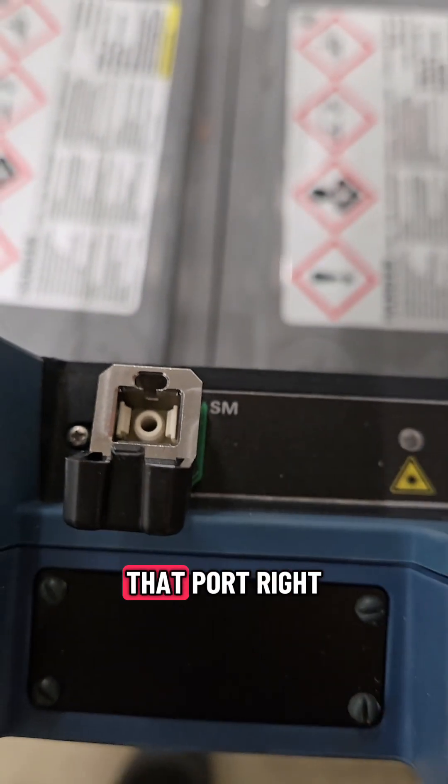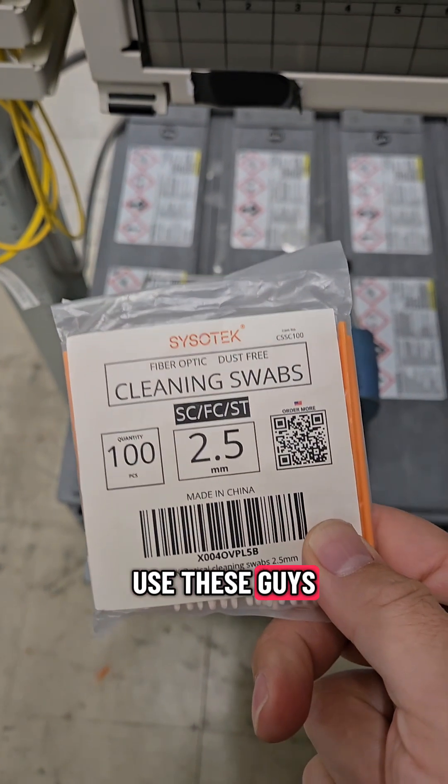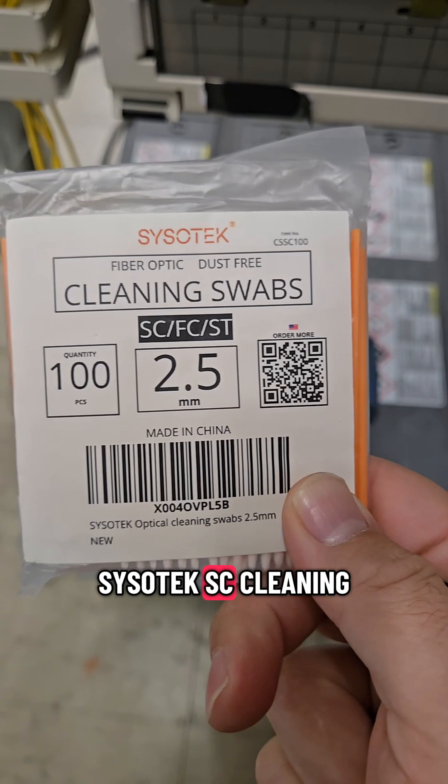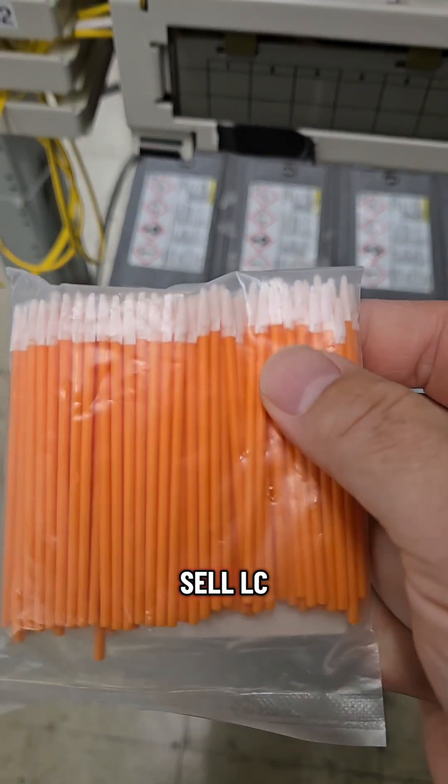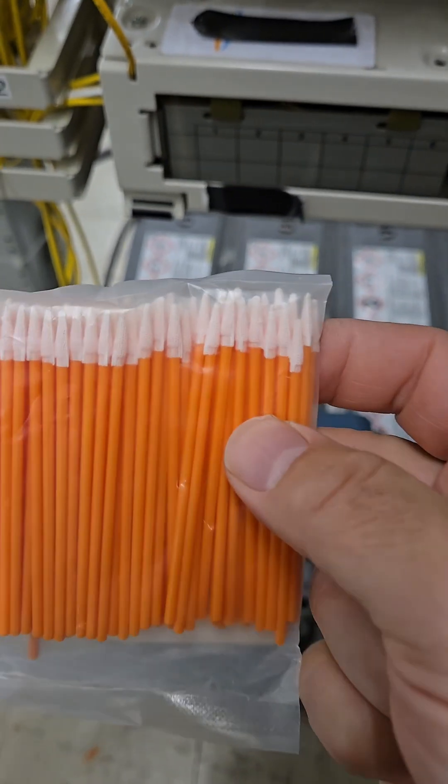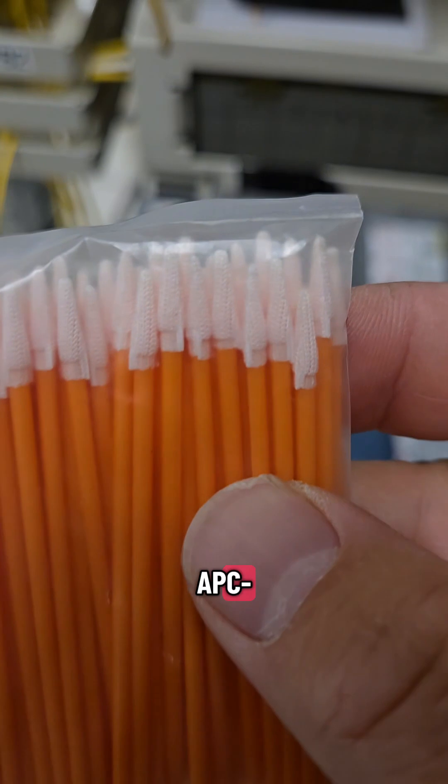That port right there is gonna get a clean and I'm gonna use these guys, Sisotech SC cleaning swabs. They also sell LC swabs as well, but this port in this OTDR is an APC SC 2.5 millimeter, but these SC sticks are gonna do the job I believe.